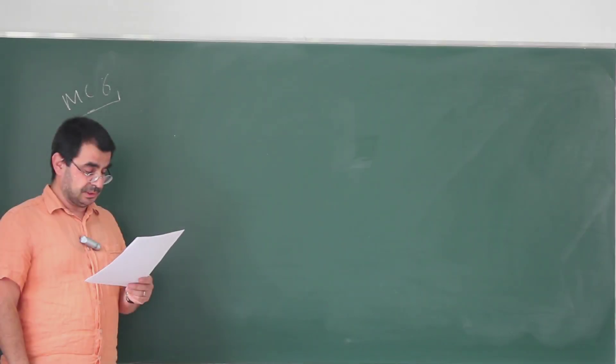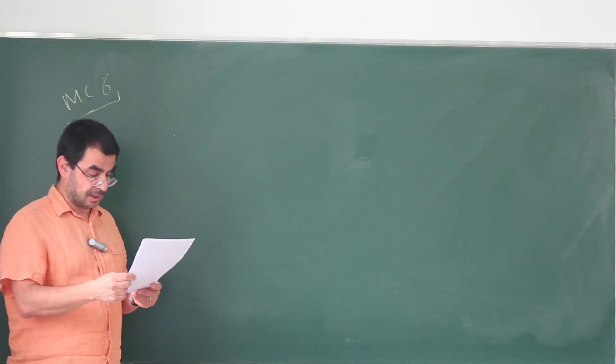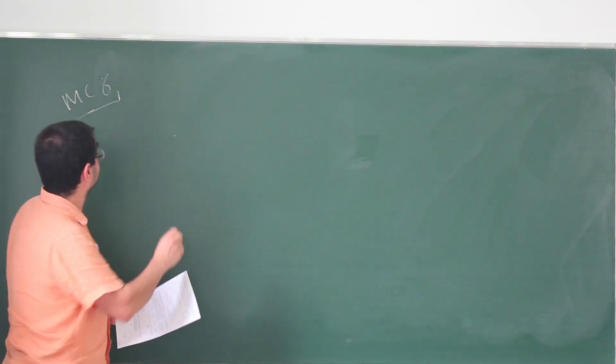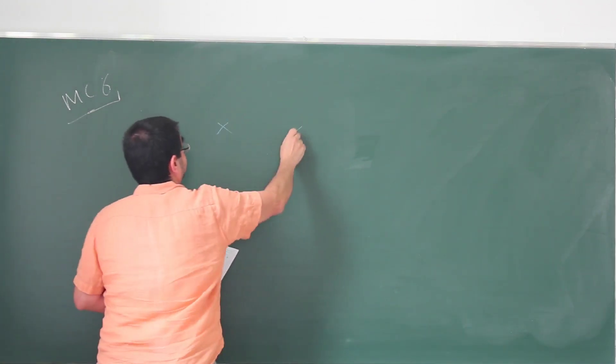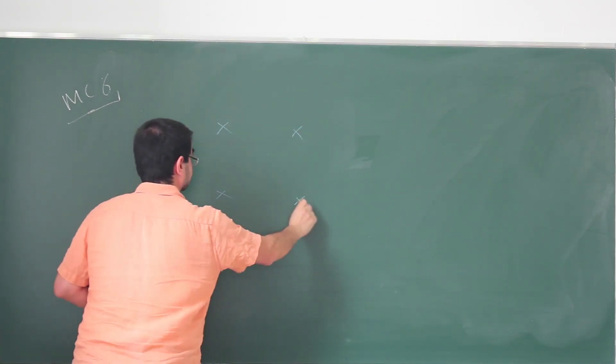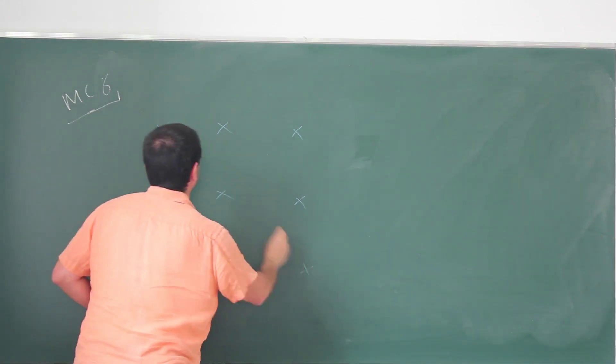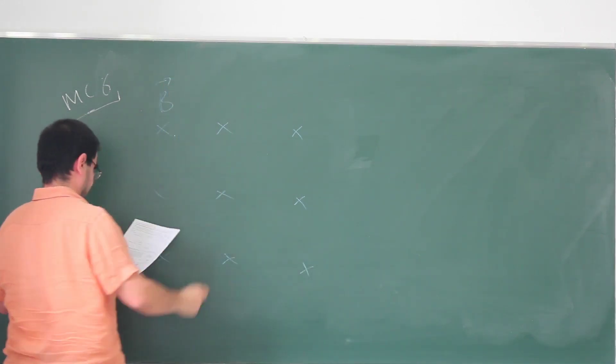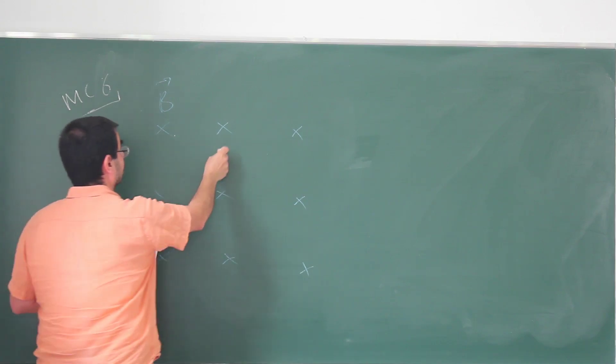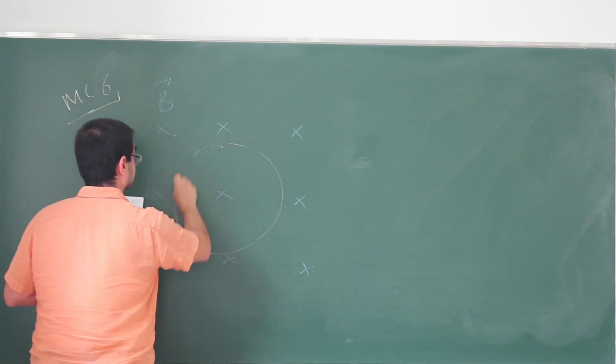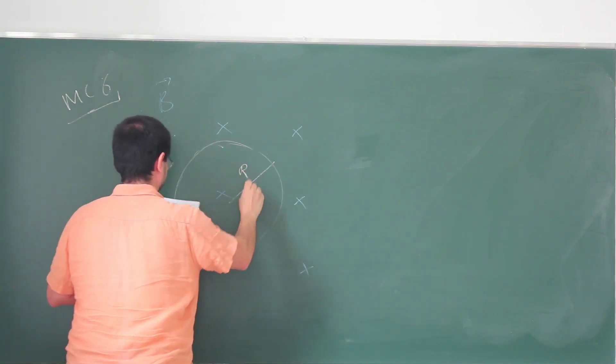For the multiple choice problem 6 of the same exam, we have a magnetic field. It is into the page, a uniform magnetic field like so. Something like this. Some magnetic field. And we have an orbit. A circular orbit of radius capital R.